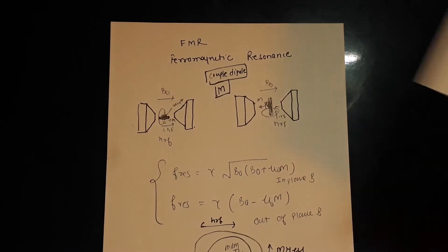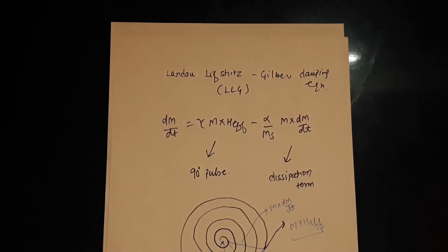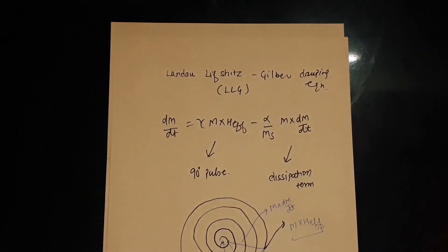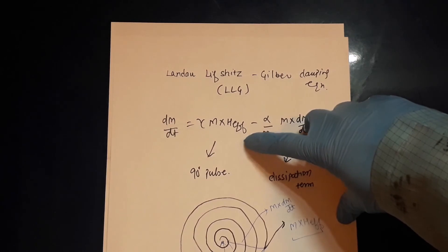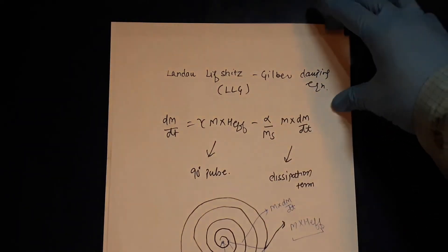Now I want to show you this equation, how the dissipation arises. Landau solved this formula in 1935 with Lifshitz. Gilbert gave a correction to this term. This is the rate of change of magnetization, this will be your 90 degree pulse, and this is the dissipation.